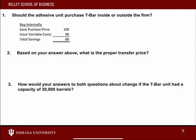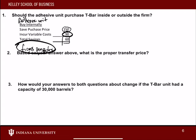For the first question, from the adhesive unit's perspective, if you decided to buy internally, you wouldn't have to pay that $150 per barrel you pay right now. But the firm would still incur $90 of variable costs, so your total savings would be $60. We're looking at this from the firm's perspective overall — by doing this, the firm overall would have a savings of about $60.